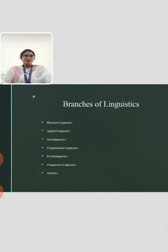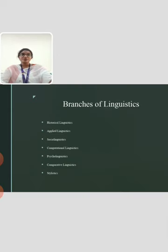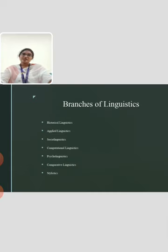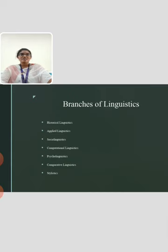Then, psycholinguistics deals with the study of various psychological factors that include how humans use and speak their language. Comparative linguistics defines how a language is similar and different from others. It deals with the properties of a language and its origin, as well as developing languages — those that are two or more languages having the same parent.